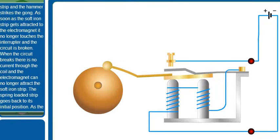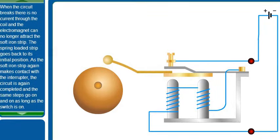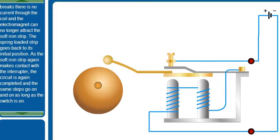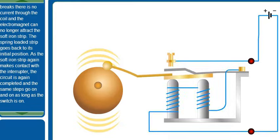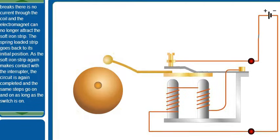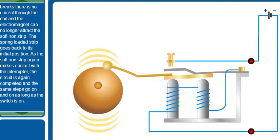The spring loaded strip goes back to its initial position. As the soft iron strip again makes contact with the interrupter, the circuit is again completed and the same steps go on and on as long as the switch is on.